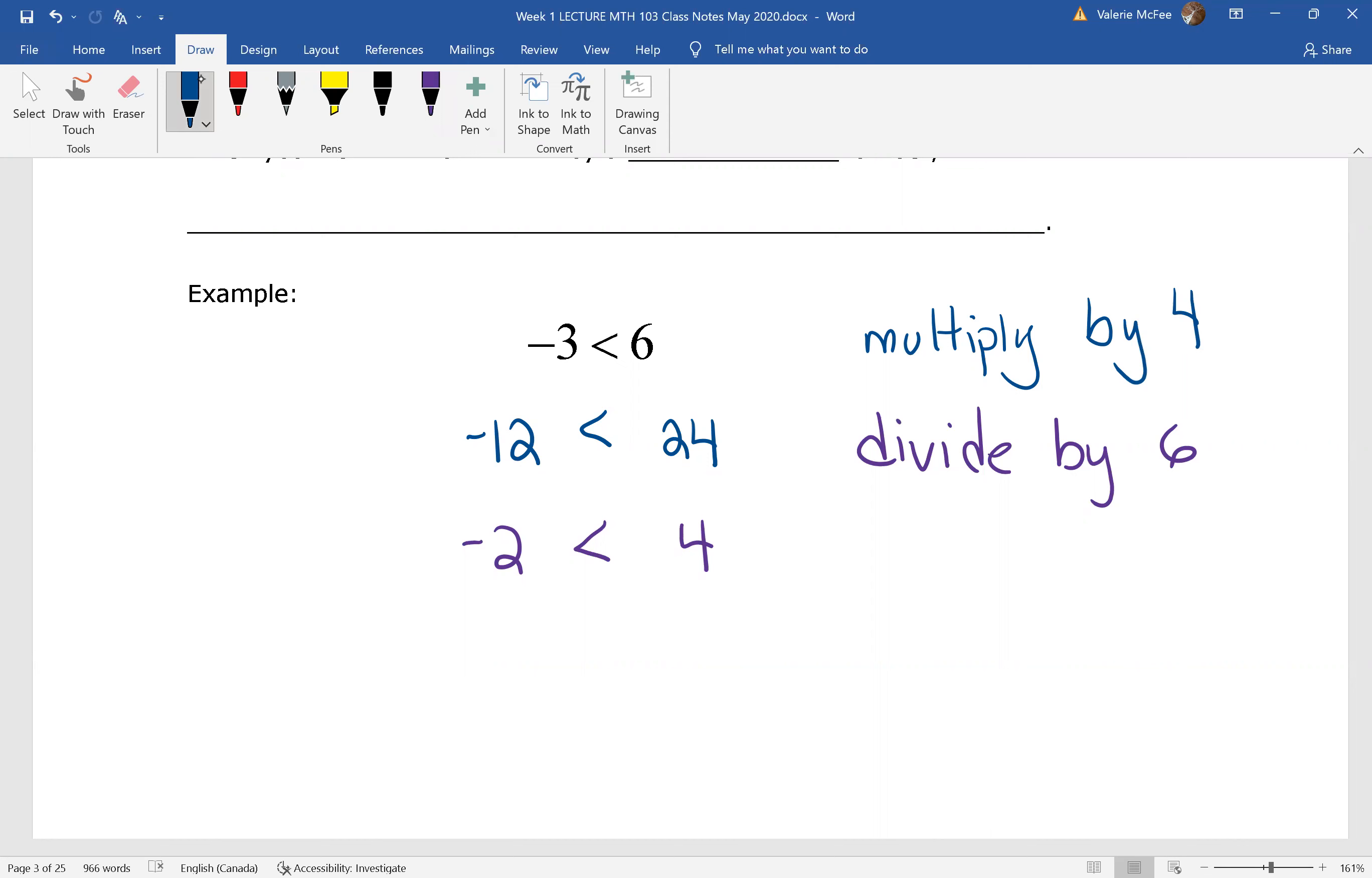I can add five to both sides, adding five gives me three here, adding five gives me nine. And I see that three is less than nine.